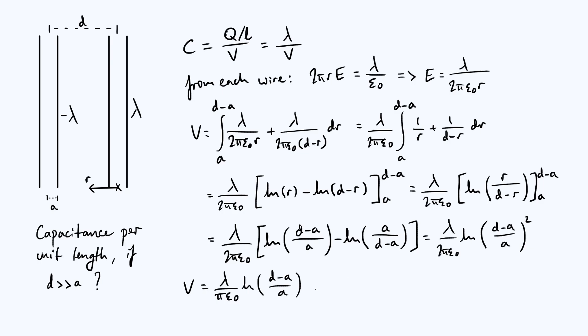We can make yet another approximation. Since we already assumed that d is much bigger than a when we were thinking about the symmetry of the electric field, we may as well say that d minus a is roughly the same as just d. So we can write this as lambda over pi epsilon 0 log of d over a.